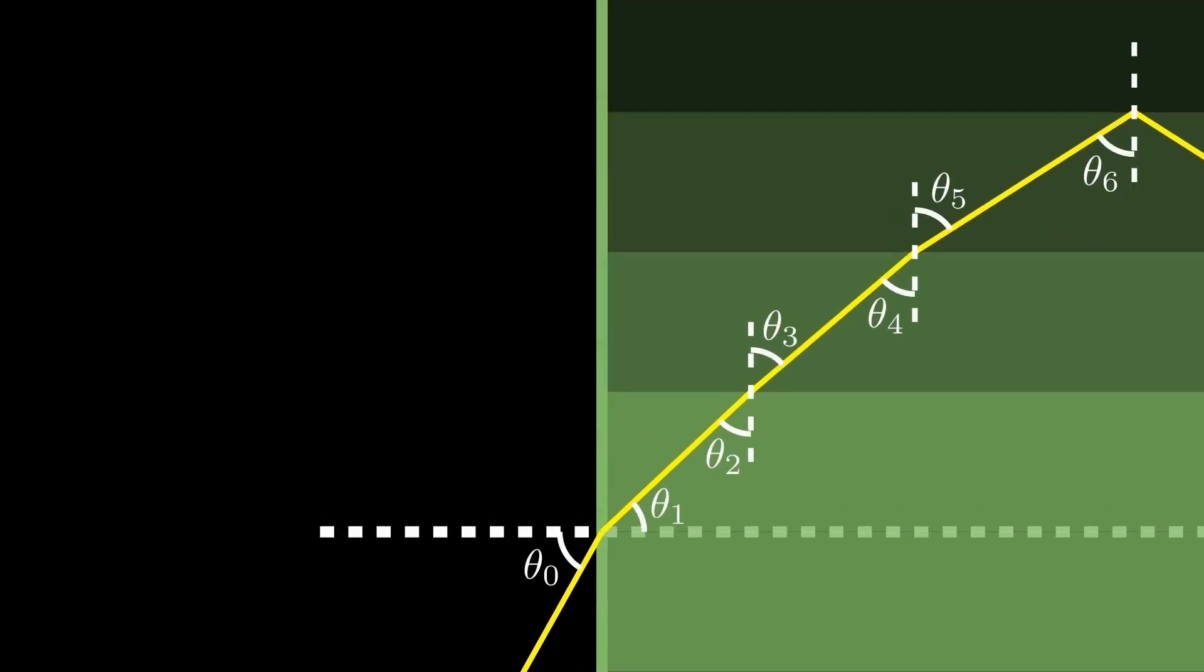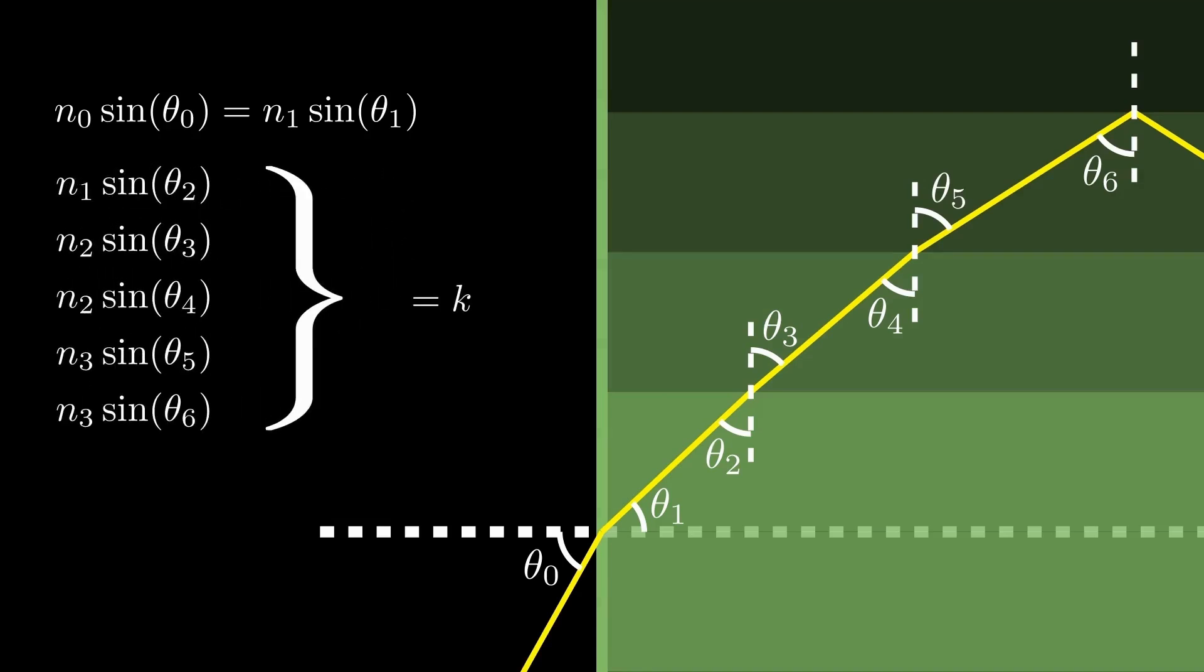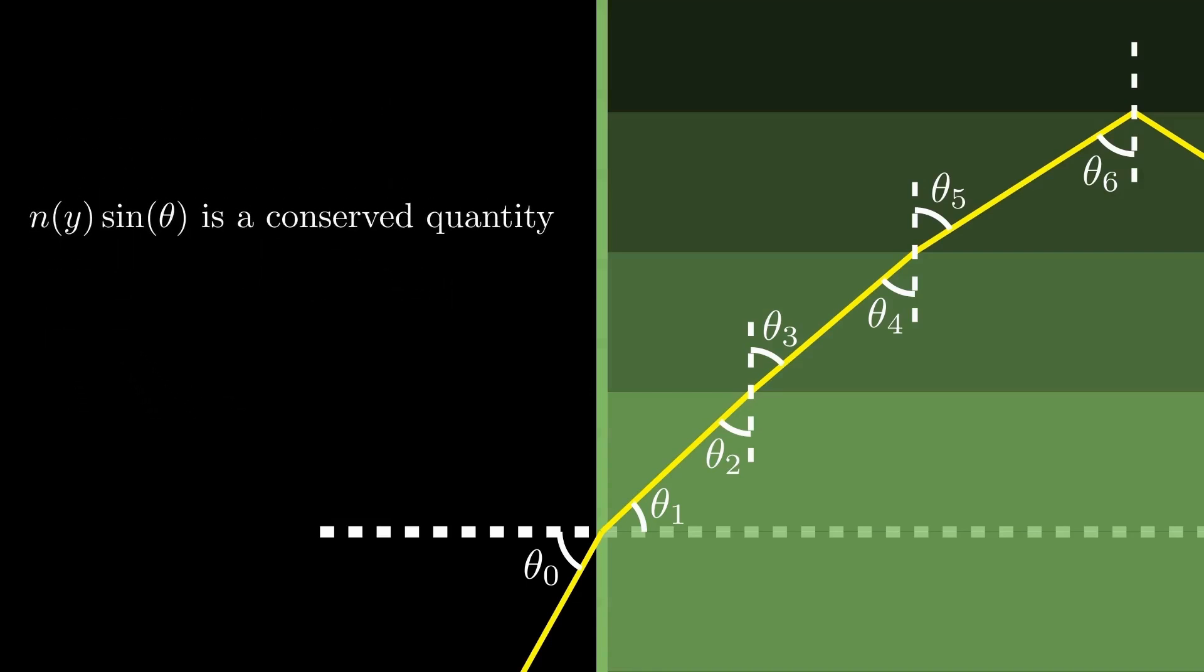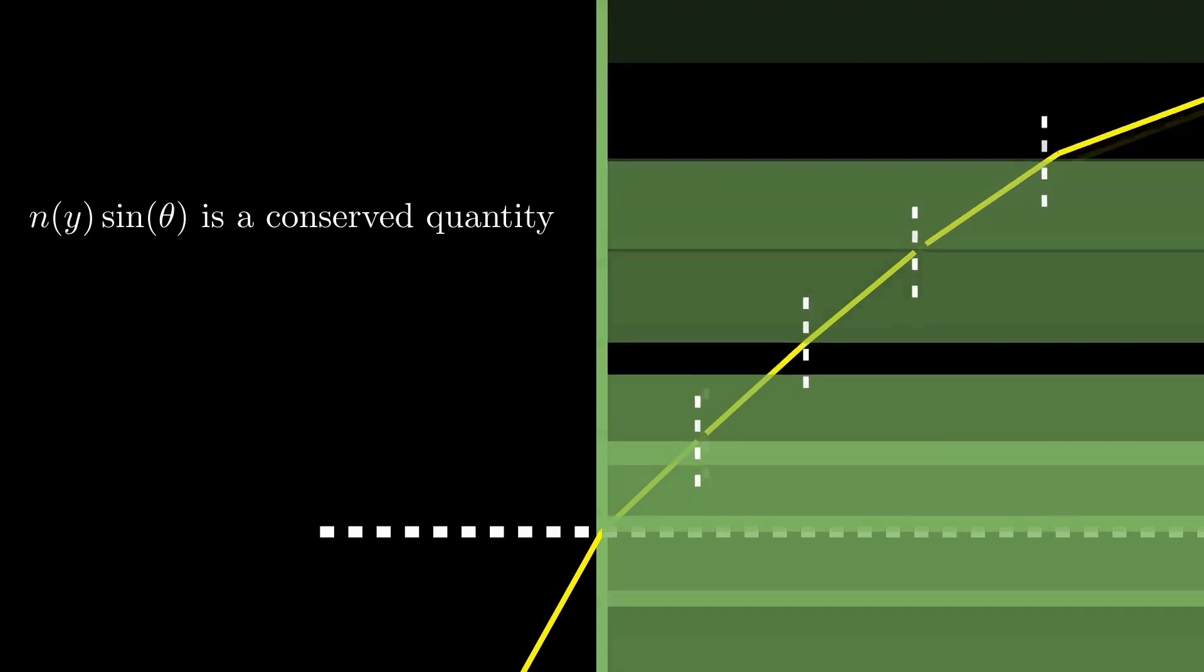Let's return to our simplified version of the cable, with only four layers. After tracing out the light's path and drawing in the normal lines, we can zoom in on just the first hump in the light's trajectory. If we apply Snell's law to the three points where the beam of light changes mediums, we get these three equations here. However, one clever observation we can make is that theta 3 and 4, along with theta 5 and 6, are alternate interior angle pairs, and thus equal to each other. This means that our many different versions of n sine theta are all equal to some constant k. Another way of saying this is that n sine theta is a conserved quantity that never changes.